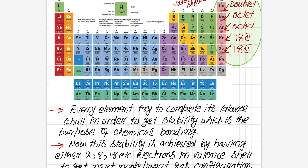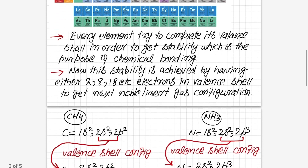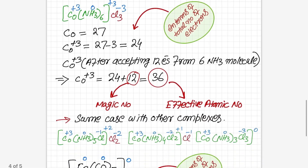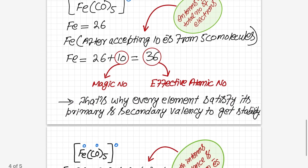Similarly, below cobalt is rhodium with atomic number 45. Rhodium also needs 18 electrons in its valence shell, so it attains the noble gas configuration of xenon. If we talk about total electrons: 45 + 18 = 54, so the EAN for rhodium is 54. The number of electrons rhodium needs to accept to reach 54 is its magic number. So while the EAN changes in absolute terms, the valence shell always needs 18 electrons — that is the basic difference between EAN, the 18-electron rule, and the magic number.